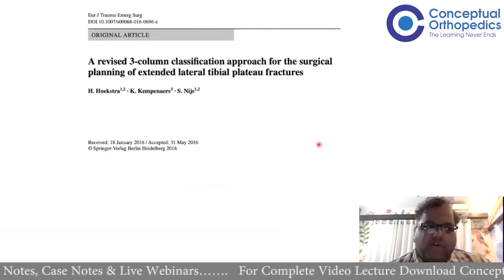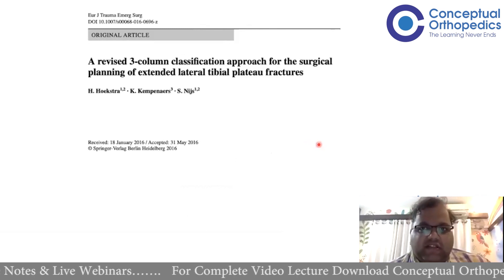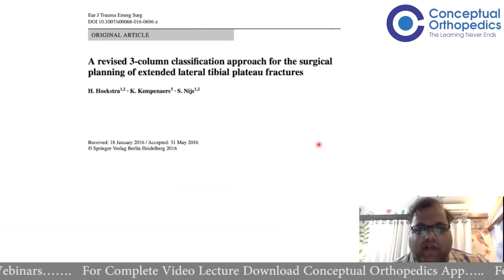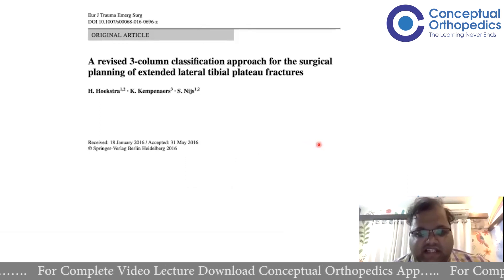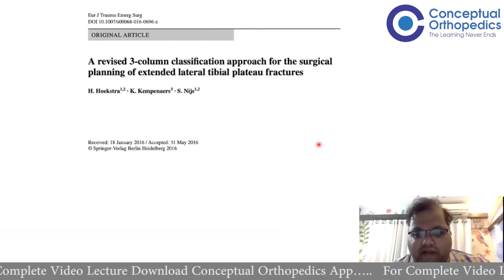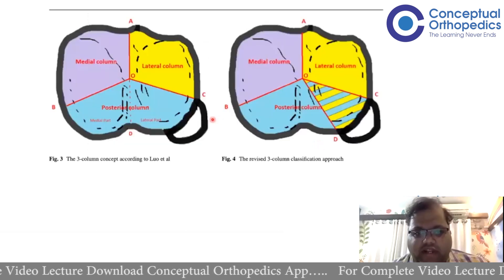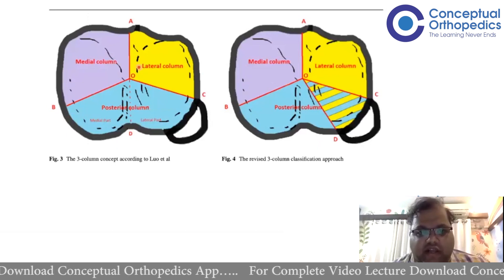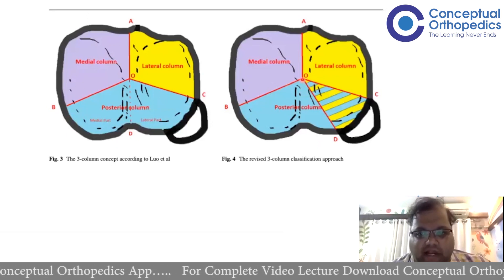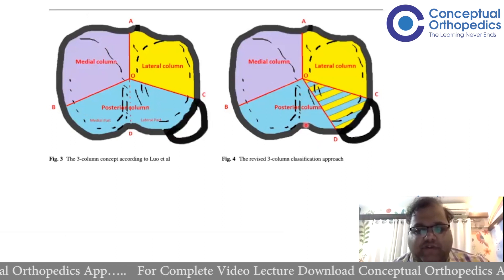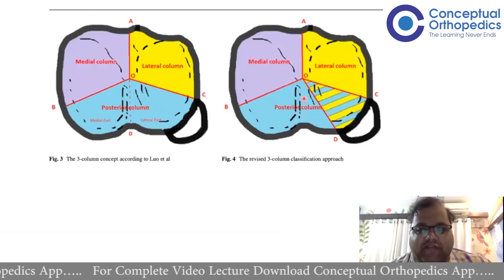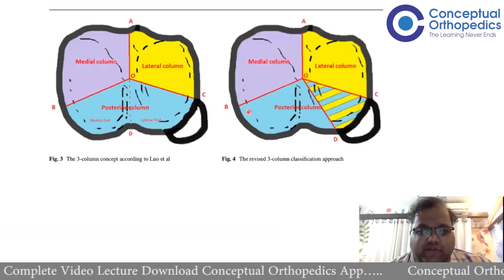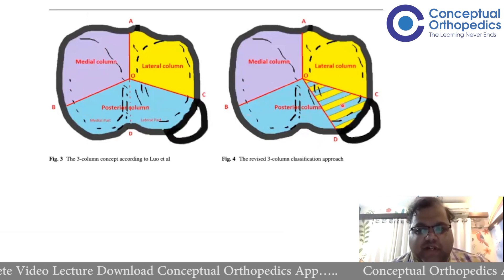The revised three-column was brought about by Stéphane Nies from Belgium in 2016. They came out with a revised three-column where they slightly modified Kongpeng Luo's approach — instead of taking the midline as the differentiating mark for postero-medial and postero-lateral, it is better to use the anterior and posterior border of the fibula, where everything behind this border forms the postero-column and everything in front forms the postero-lateral column.